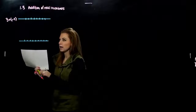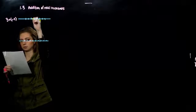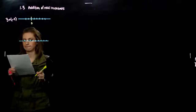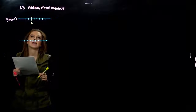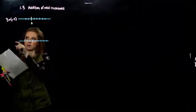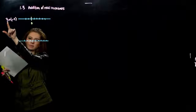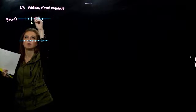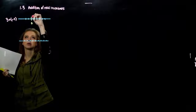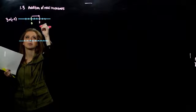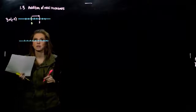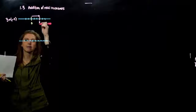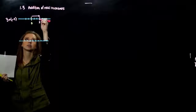So what happens? I'm starting from 0. From 0, this is telling me I need to move in the positive direction 3 units. So I'm going to move 1, 2, 3 away from 0, and I hit positive 3, which makes sense. Then, from there, I now want to move negative 5 units.